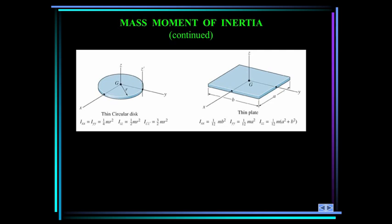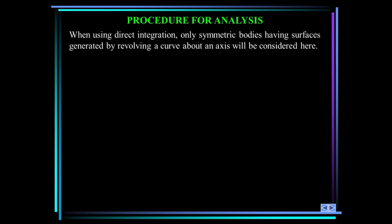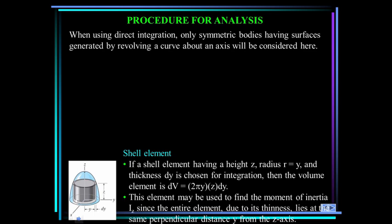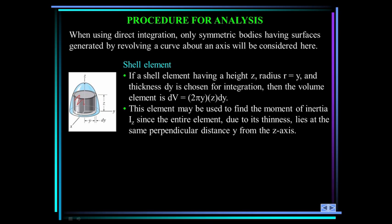The two figures shown are a thin circular disk and a thin plate. These are shapes commonly used when working with three-dimensional bodies and are often used as the differential element being integrated over an entire body. Here you can see the formulas for the mass moment of inertia about various axes for these two common shapes. The inside back cover of the Hibbler text has mass moment of inertia formulas for a number of shapes. When using direct integration, only symmetric bodies having surfaces generated by revolving a curve about an axis will be considered here.